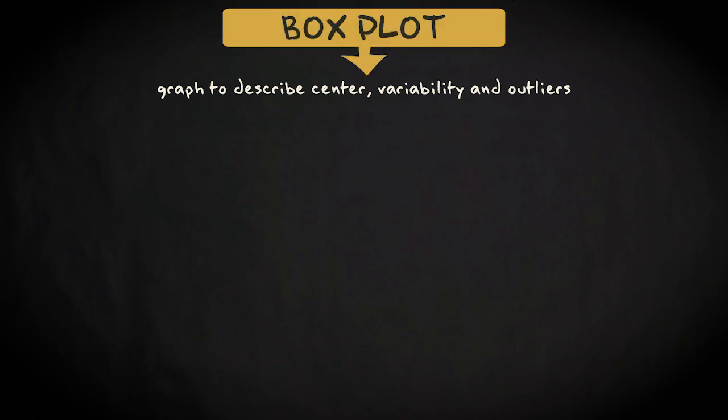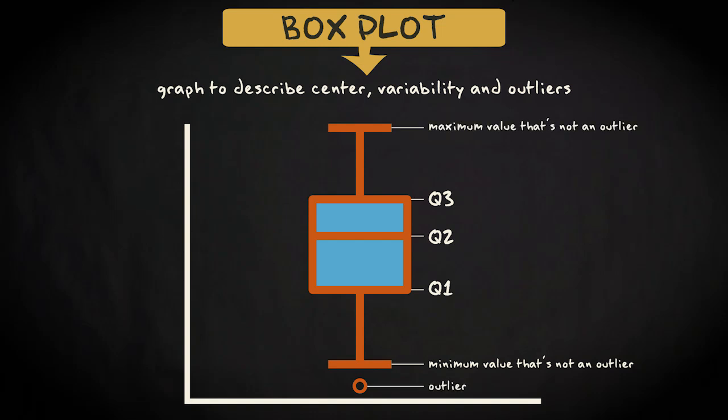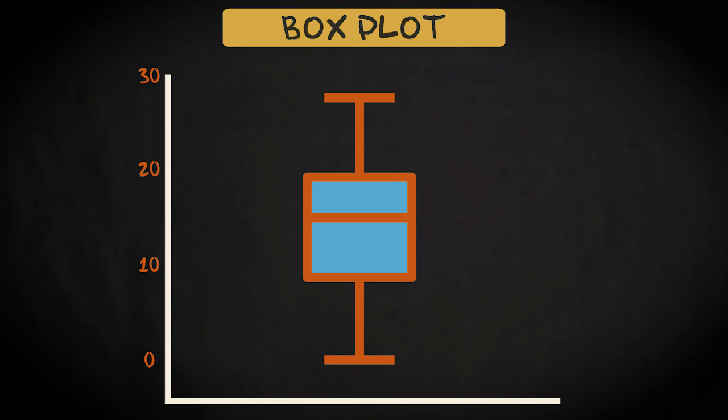There is one specific type of graph that is very useful when it comes to describing center and variability, and detecting outliers. That graph is the so-called box plot. The box plot shows you at a glance Q1, Q2 and Q3, the minimum value that's not an outlier, the maximum value that's not an outlier, and the outliers. This is a box plot based on the previous example.